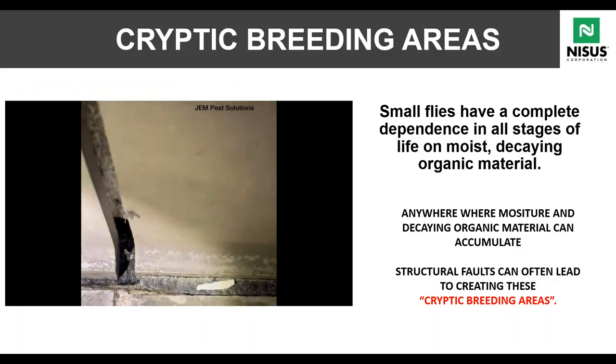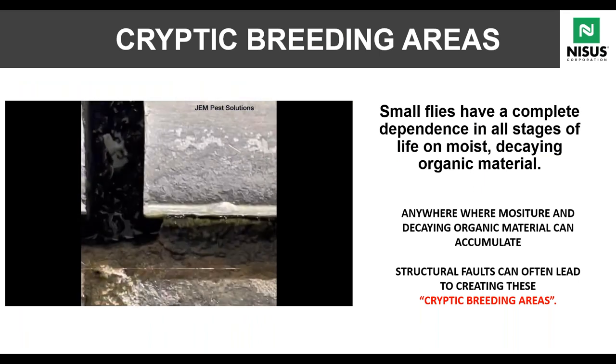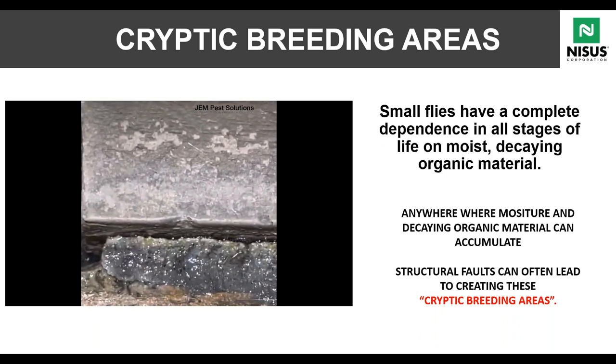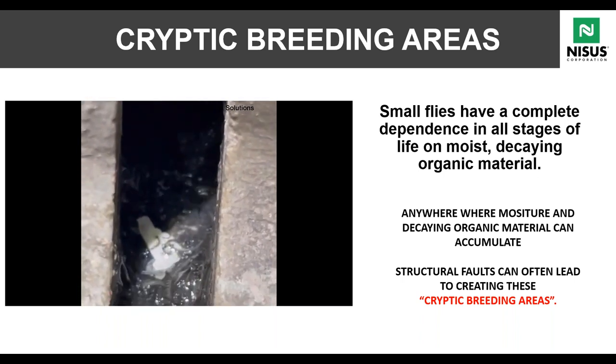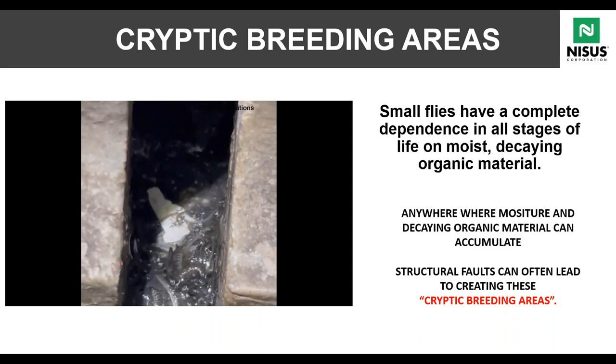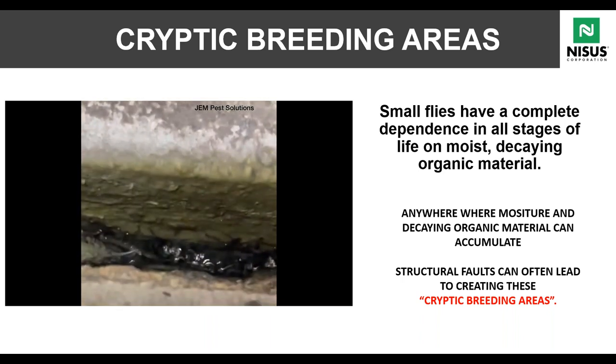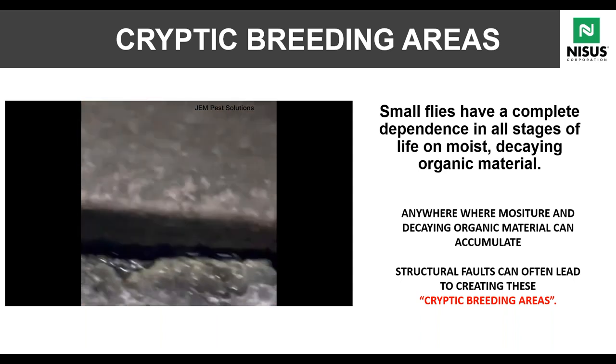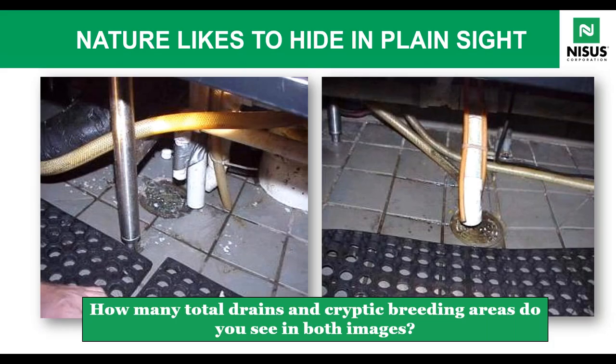Let's talk about cryptic breeding areas. Small flies have a complete dependence on moist or decaying materials at all stages of life. This isn't always a drain — in this video, the structural integrity of the floor has been busted up. They're hosing down the floor and pushing water into cracks and crevices, creating cryptic breeding areas. My colleague George Williams likes to say nature likes to hide in plain sight. Small fly problems are about 80% cryptics and 20% drains. When we get small flies, the first thing we do is run to the drains — but there's so much more to it. Anywhere organic material can collect and build up becomes a cryptic breeding area.